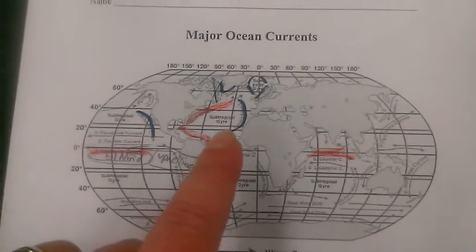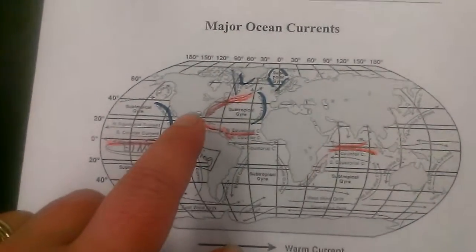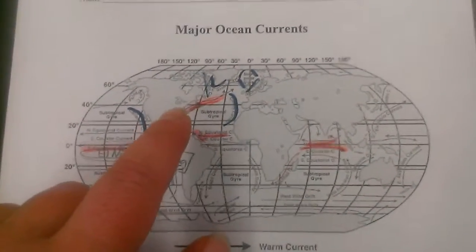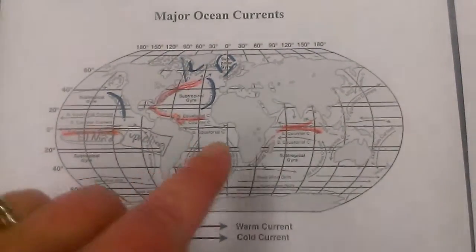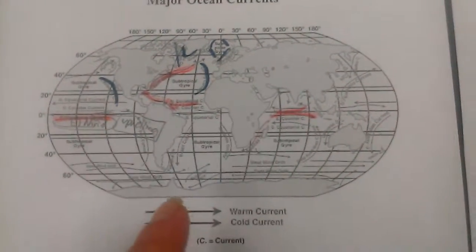You may also notice that when these currents come in and hit a landmass, in the northern hemisphere they bend to the right. In the southern hemisphere, when they come, they bend to the left. That's because of the Coriolis effect. We're not just stationary—the Earth is actually spinning, which causes our currents to bend in different directions.